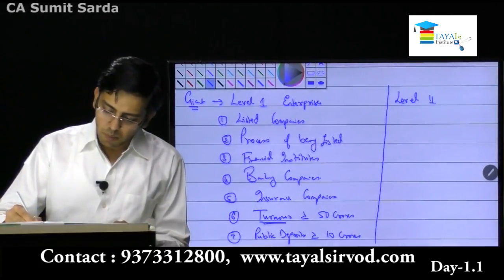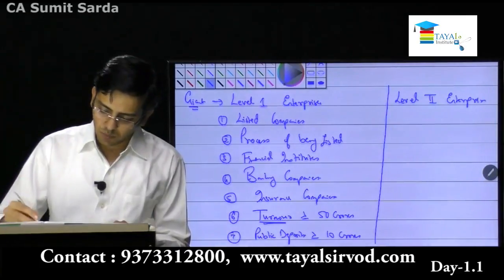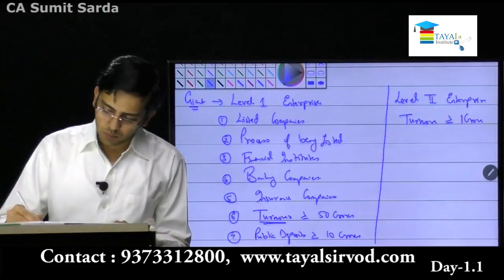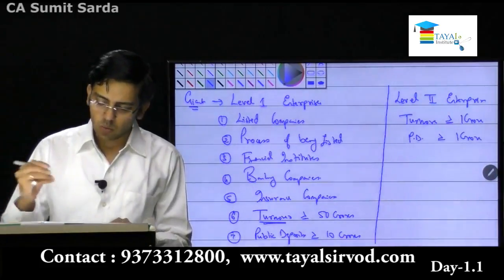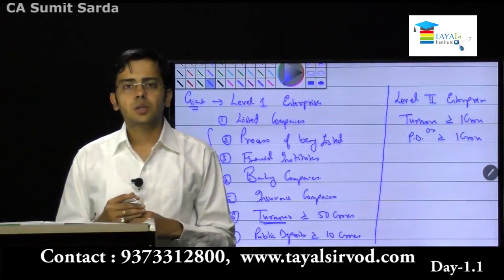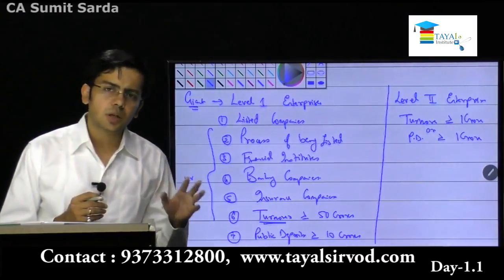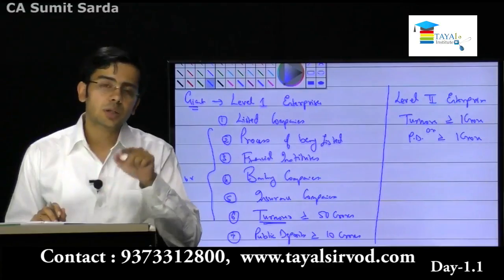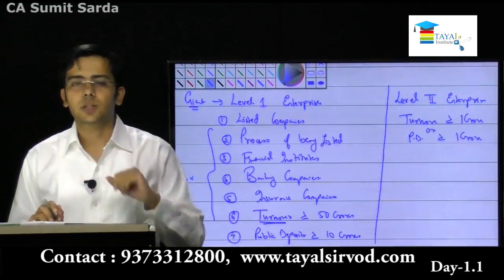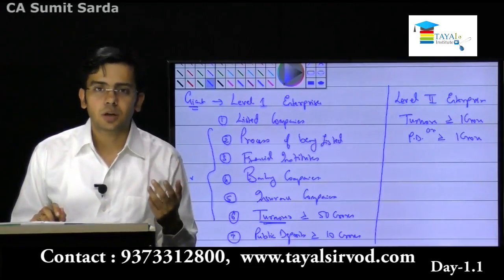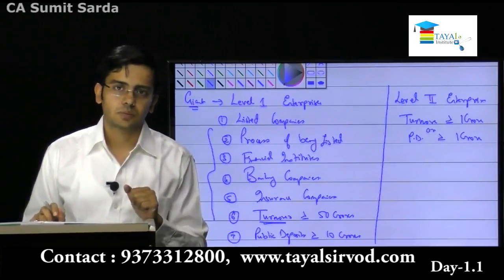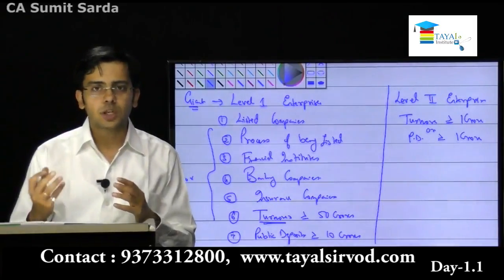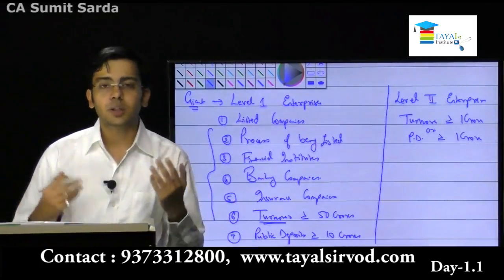Level 2 enterprises are those whose turnover is greater than 1 crore or public deposits greater than 1 crore — any of these conditions makes them a medium-size level 2 enterprise. They have been given certain relaxations: some accounting standards they do not need to follow, and some they need to follow with certain relaxations. For example, for AS 20 earnings per share, level 2 enterprises do not need to give details about diluted earnings per share. A complete list is available in the notes.